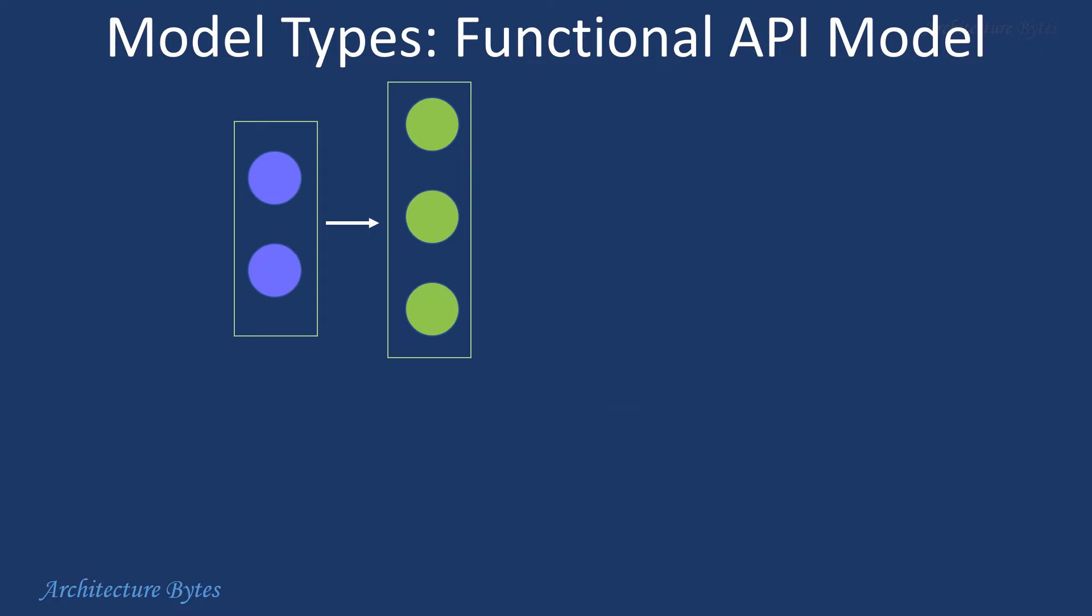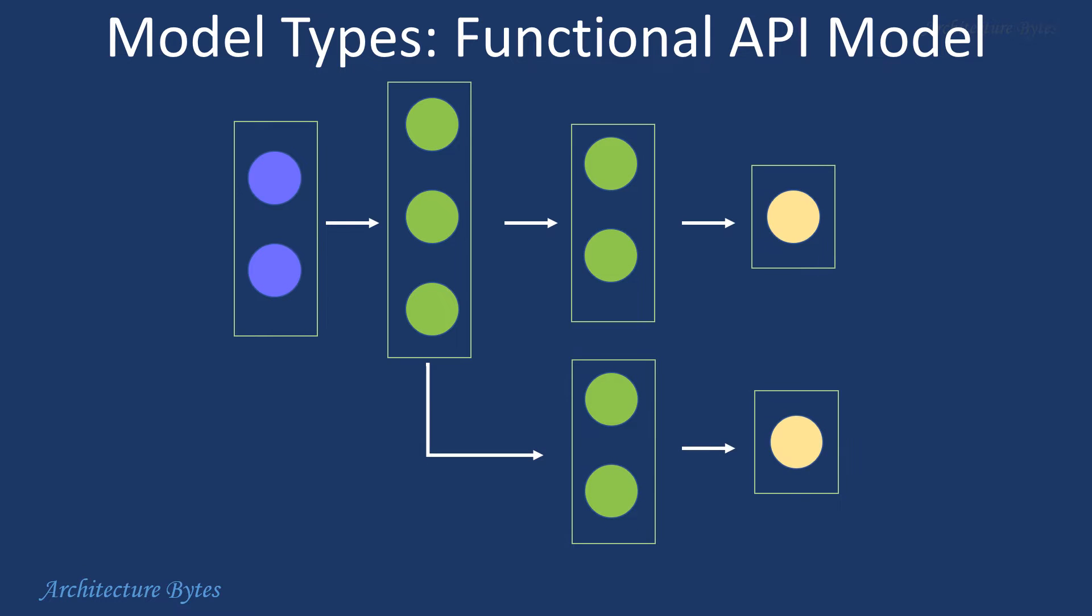And this is a functional API model. Complex model architectures can be created like this with multiple inputs and outputs. It is useful for non-linear connections between layers such as branching and merging.